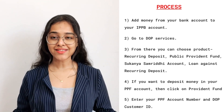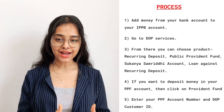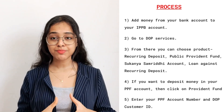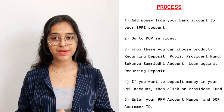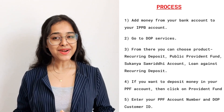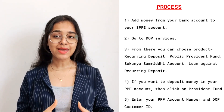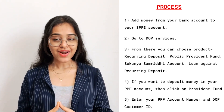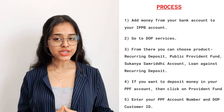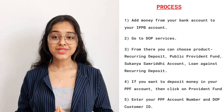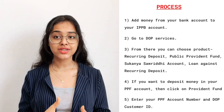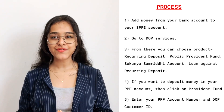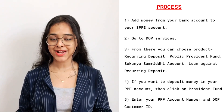PPF account holders can transfer money online from their bank account to a post office PPF account via the India Post Payments Bank or IPPB app. First, add money from your bank account to your IPPB account. Then go to DOP products, choose PPF, enter your PPF account number and DOP customer ID, choose the installment duration and amount, etc. IPPB will then notify you of a successful payment transfer made through the app.